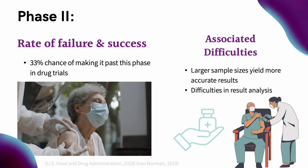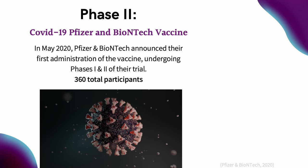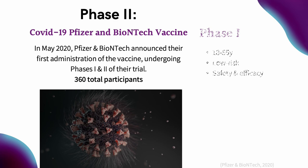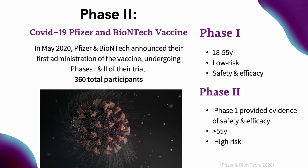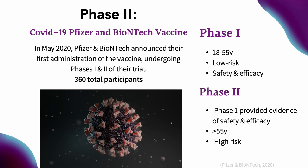In May 2020, Pfizer and BioNTech announced their first vaccine administration, reporting they were undergoing Phases 1 and 2. With a total sample size of 360 for both phases, Phase 1 had subjects aged 18 to 55 years old as low-risk participants. Once Phase 1 provided evidence of safety and efficacy, participants older than 55 were administered the vaccine in Phase 2.